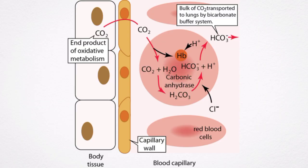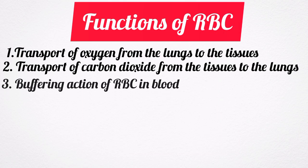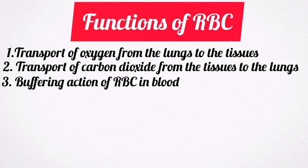Red blood cells contain a large amount of the enzyme carbonic anhydrase. This enzyme is necessary for the formation of bicarbonates from water and carbon dioxide. Thus, it helps to transport carbon dioxide in the form of bicarbonates from the tissues to the lungs. Number three is the buffering action in blood. Hemoglobin functions as a good buffer. By this action, it regulates the hydrogen ion concentration and thereby plays a role in the maintenance of acid-base balance.